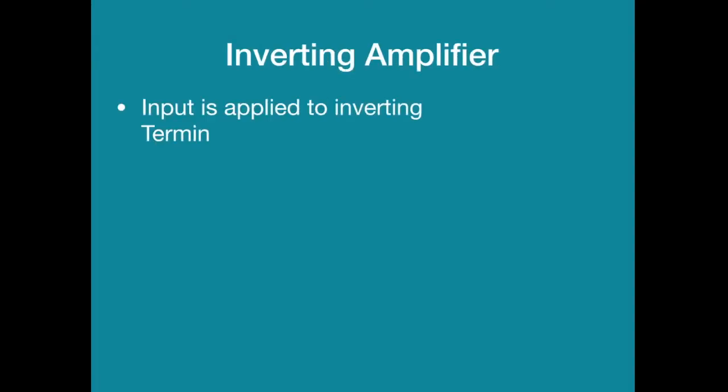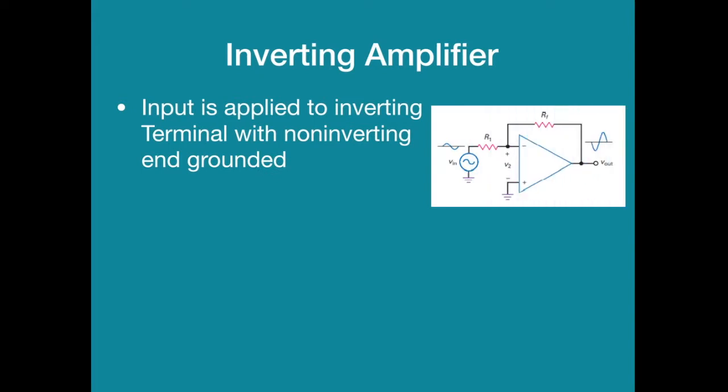To start with what inverting amplifier is: inverting amplifier is the one where the input is applied to the inverting terminal of the op-amp and the non-inverting terminal is grounded. Feedback resistance is applied from the output to input.